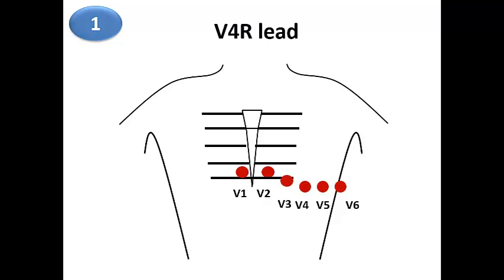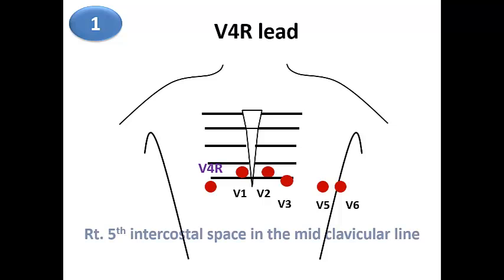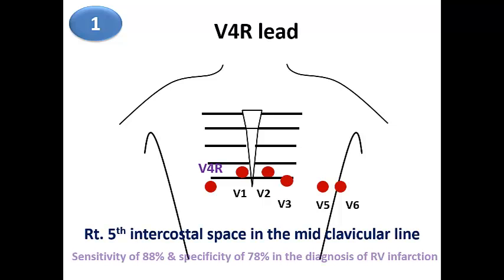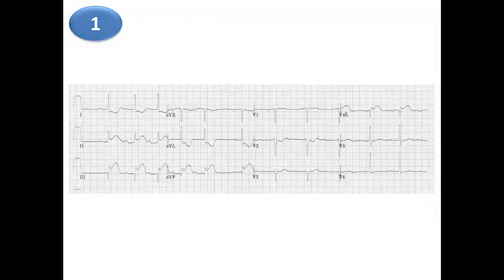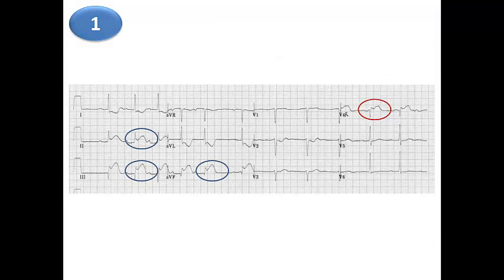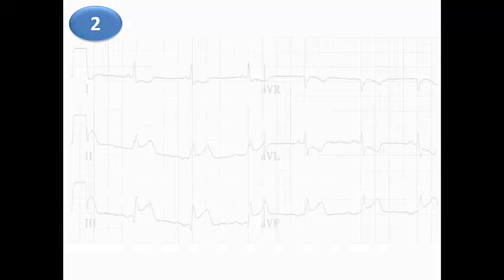There is an even simpler method: moving only V4 to the right side of the chest while leaving the other five precordial leads in place. V4R is placed in the right 5th intercostal space in the midclavicular line, with a sensitivity of 88% and specificity of 78% to diagnose RV infarction. Here is an example where the patient has inferior STEMI with ST elevation in right V4, which was the only lead moved to the right side. So we have three ways to perform right-sided ECG.